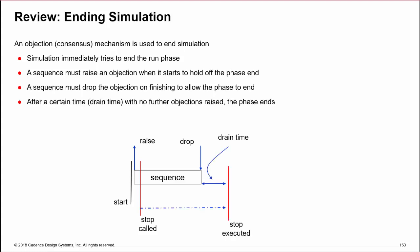After a certain period of time, if there are no further objections raised, then the run phase can end. This time is called the drain time. So why and how can we specify this drain time?